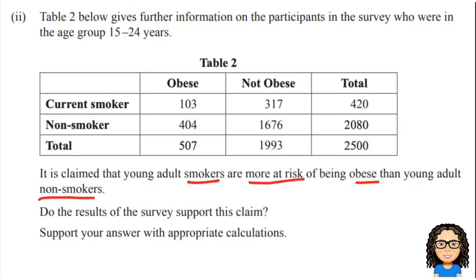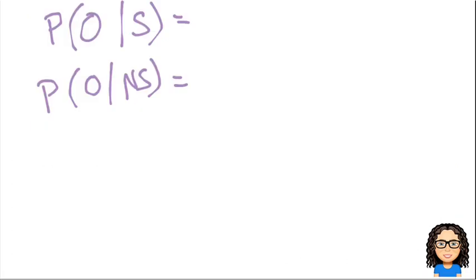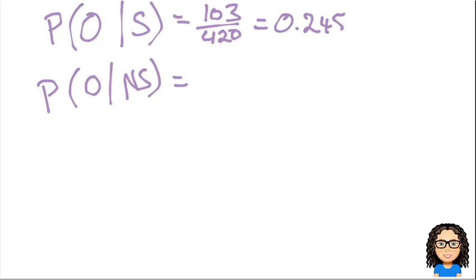So we have obese, non-smoking people. I want to start with the smokers. In this survey there are 420 smokers, and from those 420 there are 103 of them that are obese. So my chance of being obese given that I'm a smoker is 103 out of 420. I'm going to convert this to a decimal just to make it easier to compare, so that will give me a value of 0.2452.